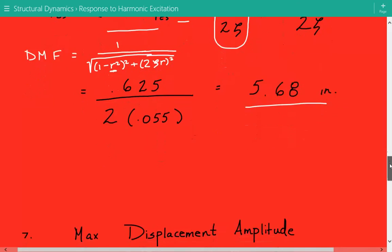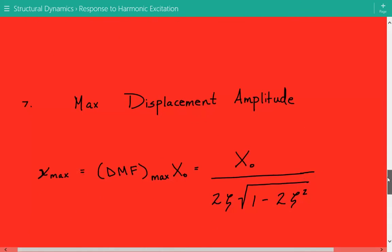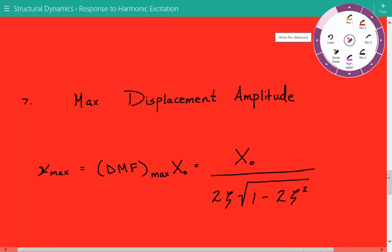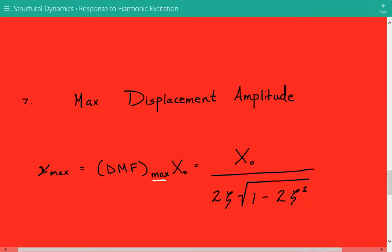Lastly, we'll calculate the maximum displacement amplitude. This is not just at resonance, but the overall maximum displacement amplitude. We'll take a similar approach: it equals the dynamic magnification factor max times the equivalent static deflection X₀.